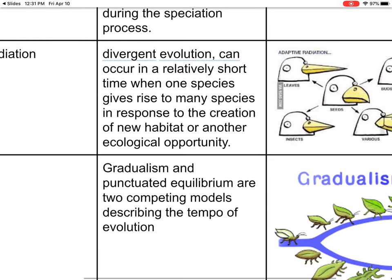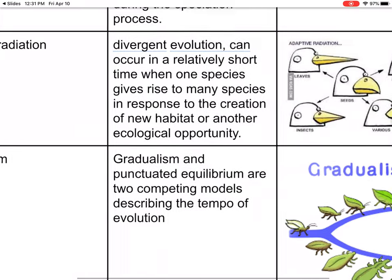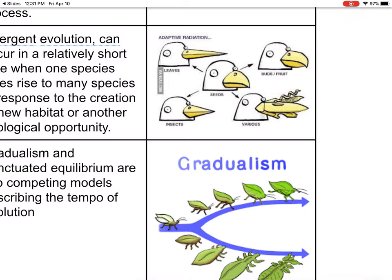Adaptive radiation: divergent evolution can occur in a relatively short time when one species gives rise to many species in response to the creation of a new habitat or another ecological opportunity. For example, if a bird has to eat something that requires a long sharp beak, then over time it's going to adapt and evolve to have a longer, sharper beak.